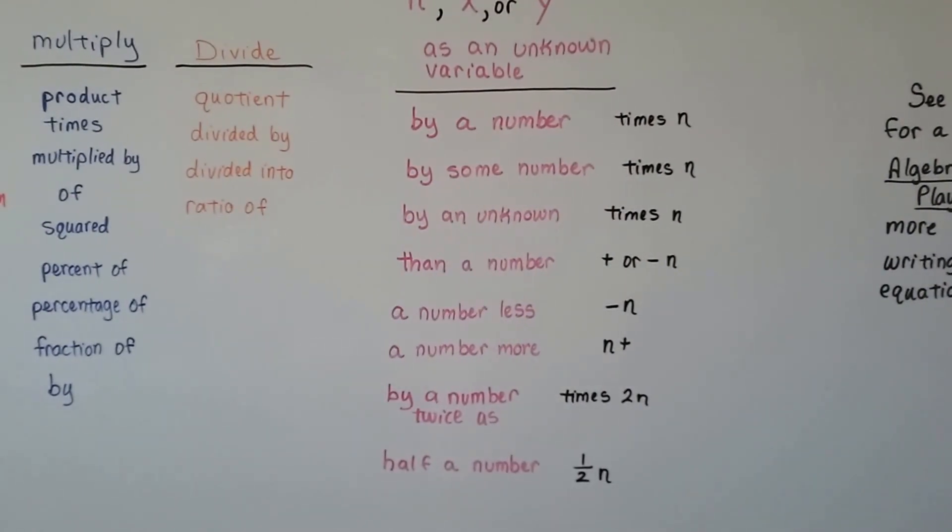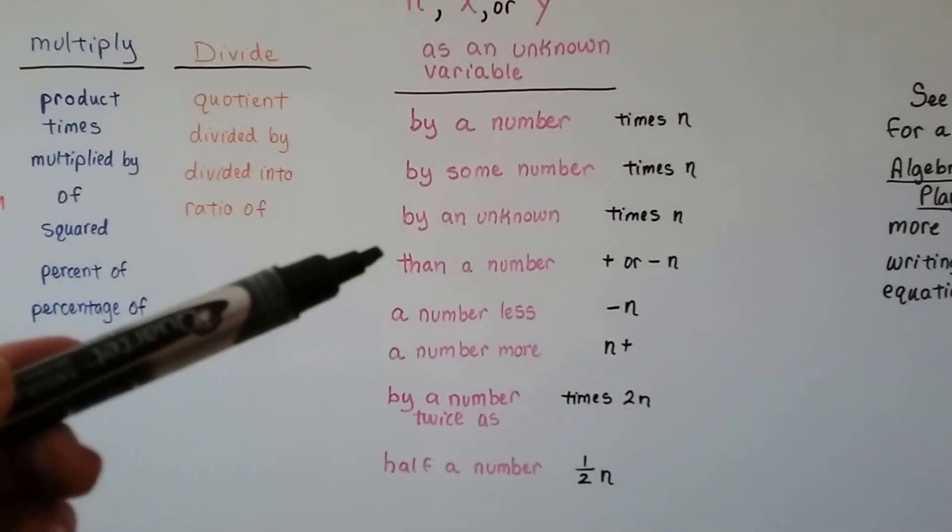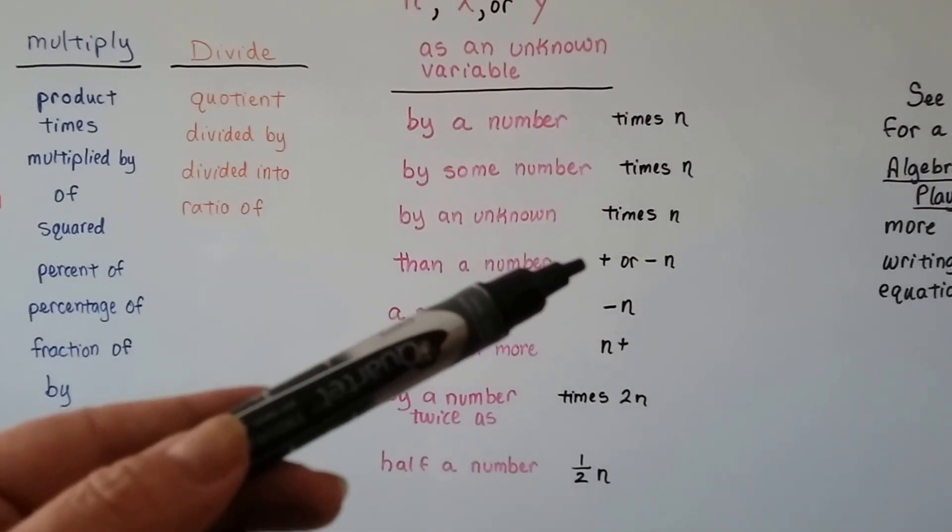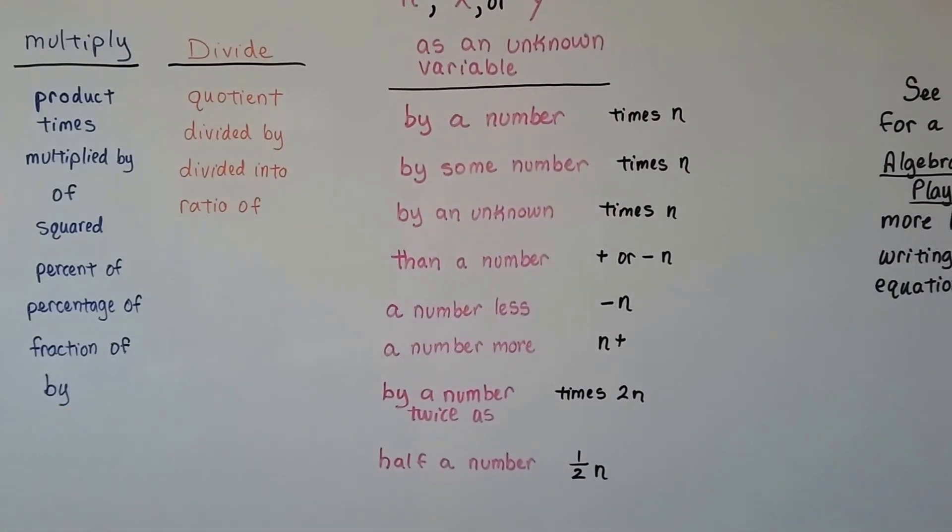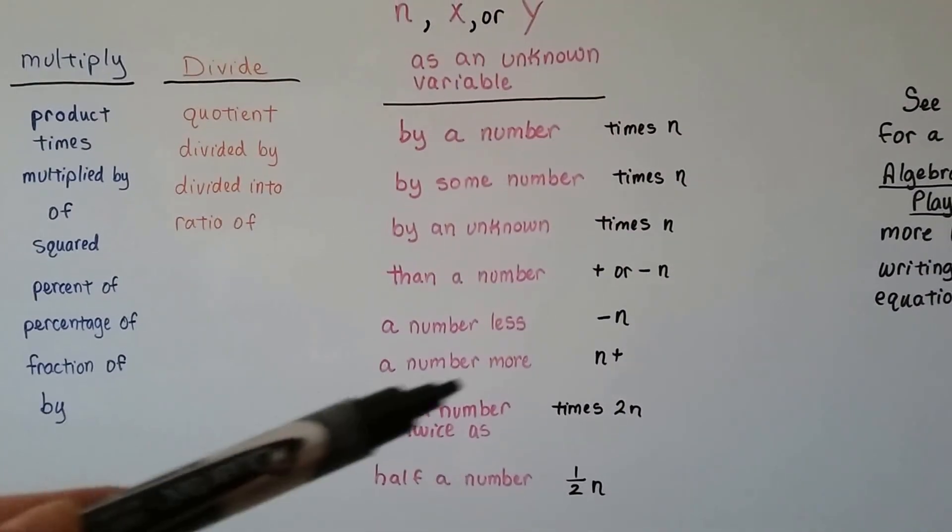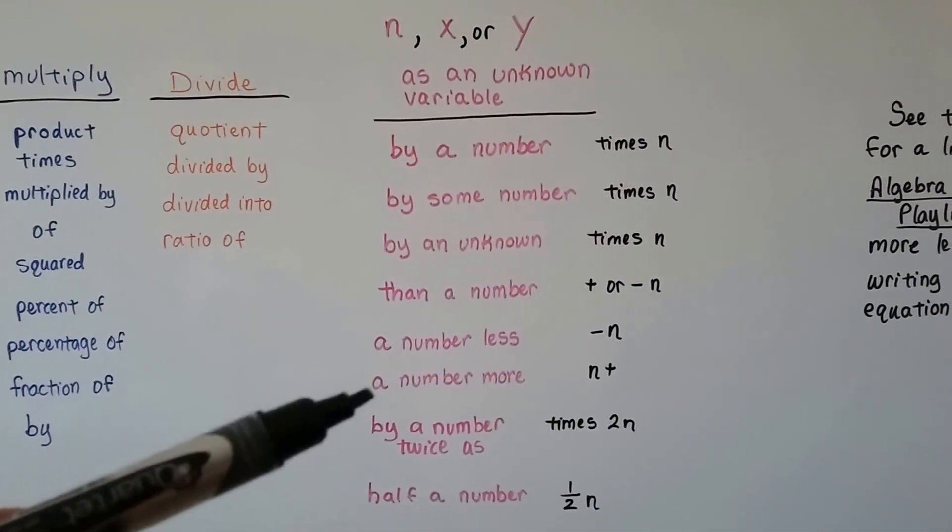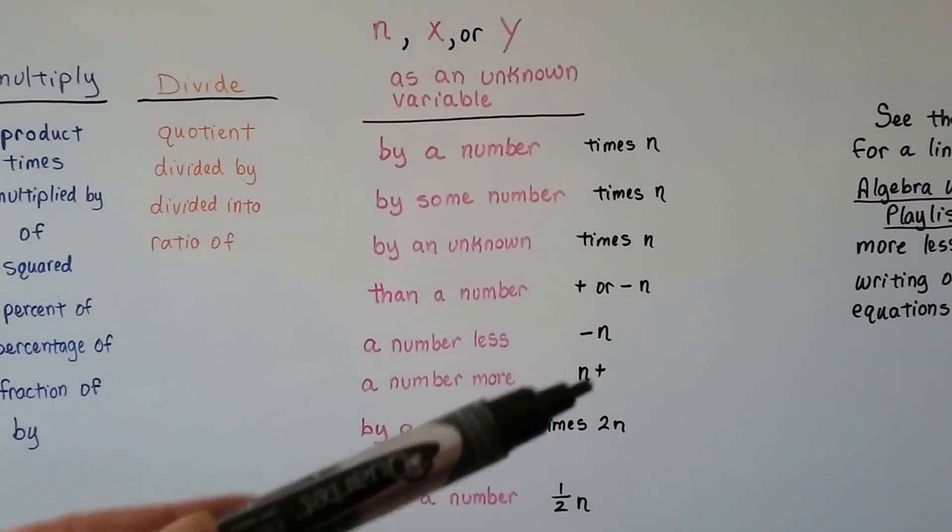If it says than a number, like more than or less than, then it's going to be plus N or minus N. For a number less, it's minus N. For a number more, it's plus N, or N plus.